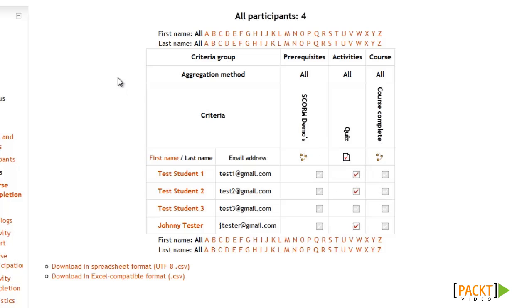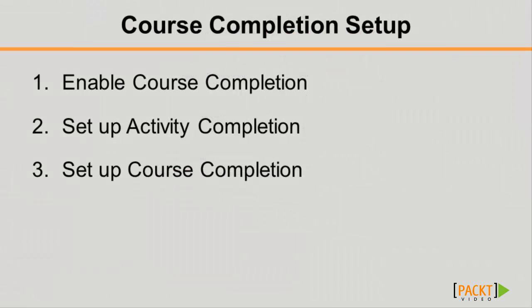Now let's go over how to set this up for your courses. When it comes to setting up course completion, there are three parts to the overall setup process. The first part is to enable the course completion feature for your Moodle site. The second part is to set up activity completion for each activity that you want to be considered as a requirement for course completion. And the third part is to set up course completion for each course that you want to use this feature for. We'll need to start with the first part before we can start setting up activity and course completion.